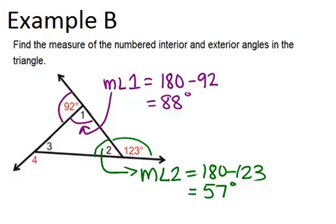Now to find angle 3 and angle 4, we can do a couple things. Now that we know a lot of information, we could find angle 3 by remembering that the triangle sum theorem tells us the three angles in the triangle have to add up to 180.